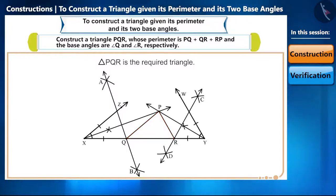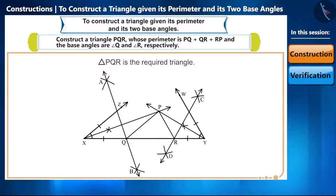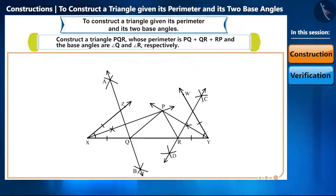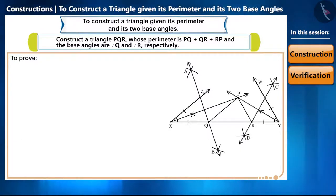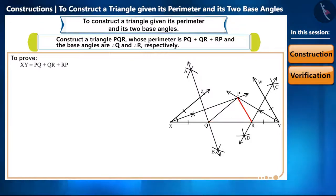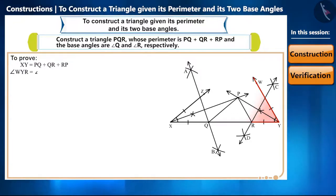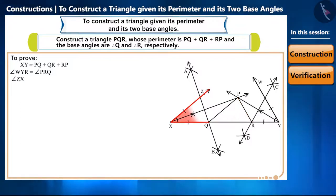Now we will have to prove that the given construction is correct, so let's verify it. We have to prove two parts. In the first part we will prove that XY equals PQ plus QR plus RP. In the second part we will prove that angle WYR equals angle PRQ and angle ZXQ equals angle PQR.